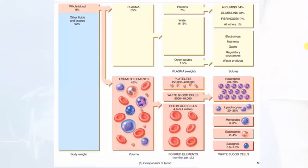Whole blood is 8% of body weight; other fluids and tissues make up 92%. Whole blood consists of plasma (55%) and formed elements (45%). From plasma: proteins are 7%, water 91.5%, and other solutes 1.5%. Proteins include albumin (54%), globulin (38%), fibrinogen (7%), and others (1%). Other solutes (1.5%) come from electrolytes, nutrients, gases, regulatory substances, and waste products.